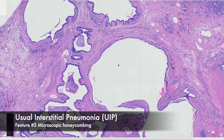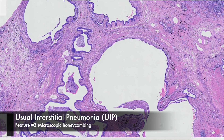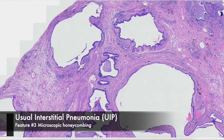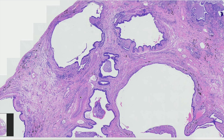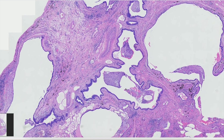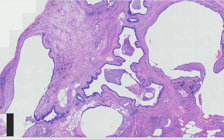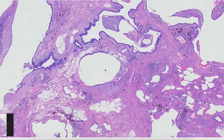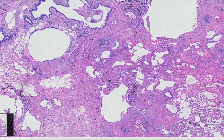When this becomes larger, it can actually be detected radiologically, and honeycombing is used as one of the key features in the diagnosis of usual interstitial pneumonia.